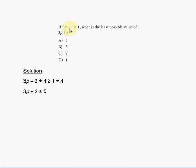If 3p minus 2 is greater than or equal to 1, what is the least possible value of 3p plus 2? The easiest way to do this is to refer to the left side of the inequality.